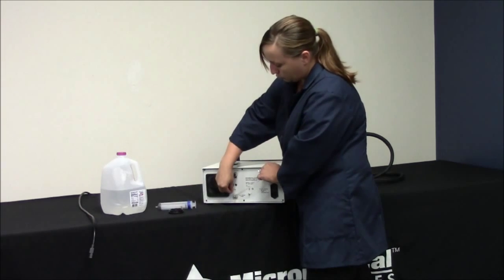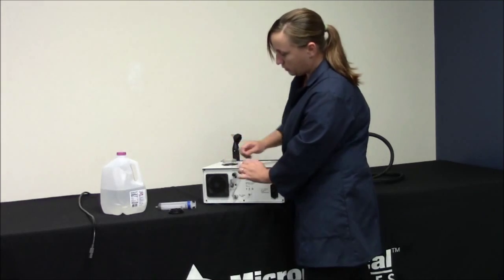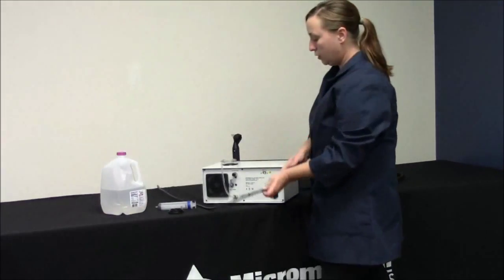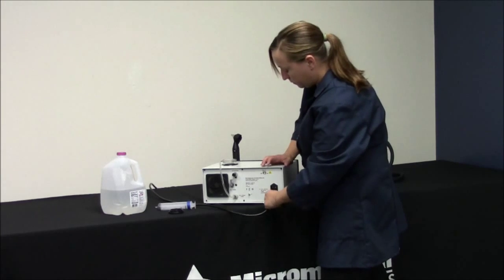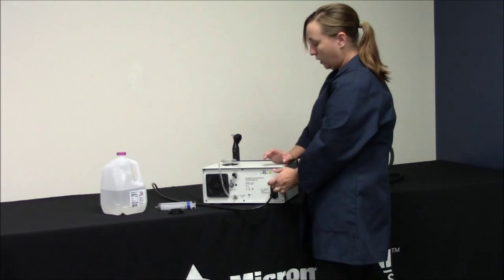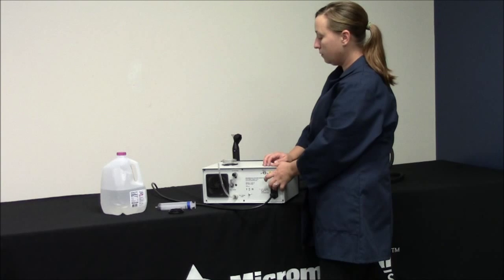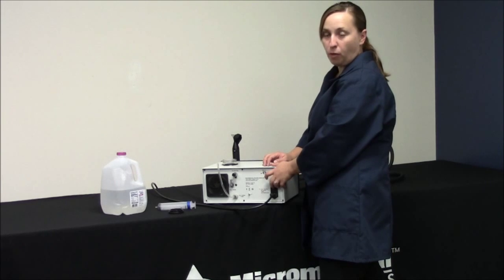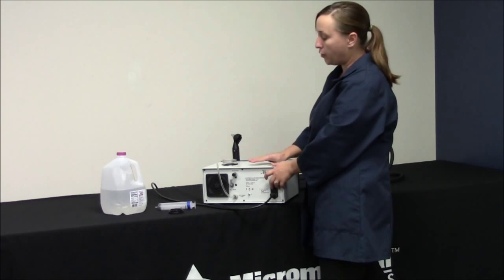Next you'll move the switch up to the run position. You will connect power and you'll turn it on. You'll let the irrigator run for about thirty seconds.